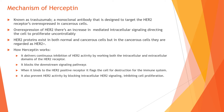How does Herceptin work? It delivers continuous inhibition of HER2 activity by working both the intracellular and extracellular domains of the HER2 receptor. It binds to the HER2 positive receptor and flags it for the immune system to come in and destroy it. It also prevents HER2 activity by blocking the intracellular HER2 signaling, inhibiting cell proliferation.